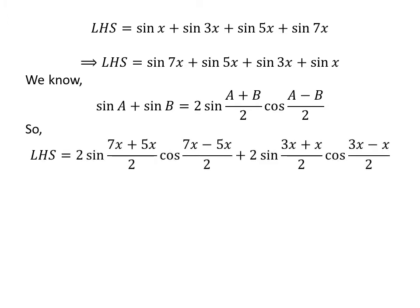Applying the above identity to (sine of 7x plus sine of 5x) and (sine of 3x plus sine of x) gives us: left-hand side equals 2 times sine of (7x plus 5x)/2 times cosine of (7x minus 5x)/2, plus 2 times sine of (3x plus x)/2 times cosine of (3x minus x)/2.